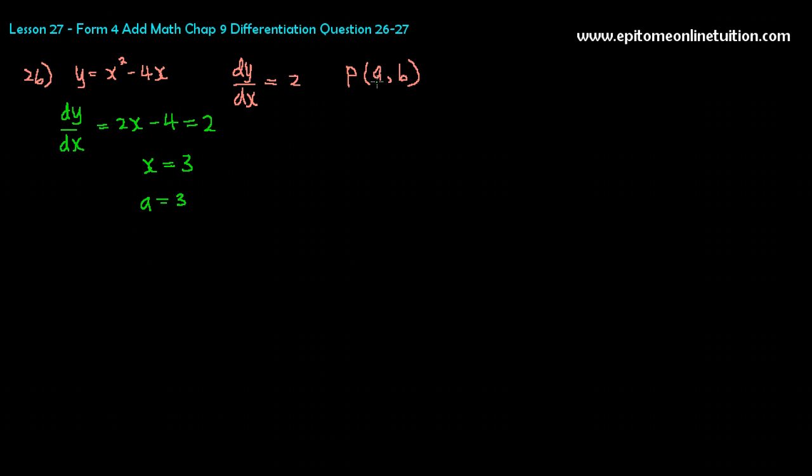So that tells you that A equals 3. So you have found A already. So the moment you have found A, you can easily find B. How are you going to find B? Well, P is (3, B).